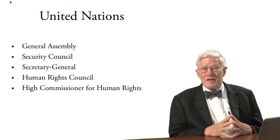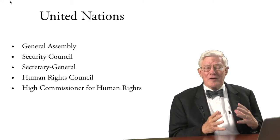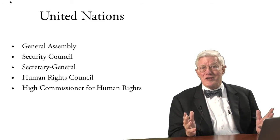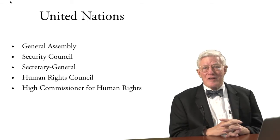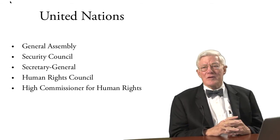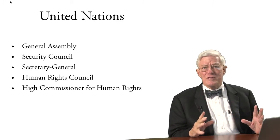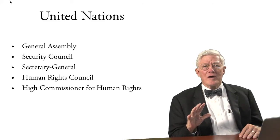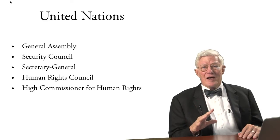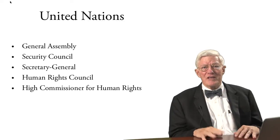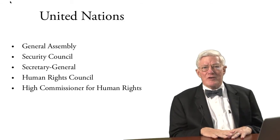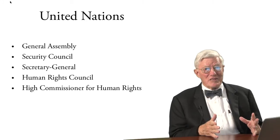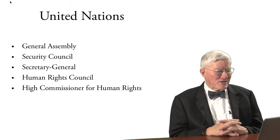Let's look at the institutions within the United Nations important to human rights. First, the General Assembly — all of the nations that have joined the United Nations, which is overwhelmingly all the nations in the world, are represented there. There is also a Security Council, formed separately from the General Assembly. Five members of the Security Council hold veto rights over Security Council action — basically the nations victorious in World War II, who gave themselves this special position when they formed the United Nations.